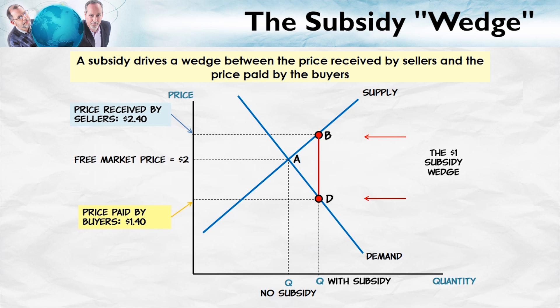A tax creates revenues for the government; a subsidy creates costs to the government. The per-unit subsidy is $1 — given by the height of the wedge. The quantity which is subsidized is the new quantity with the subsidy. So the total cost of the subsidy is $1 times that quantity, or the subsidy amount times the quantity, shown by the blue area in the diagram.